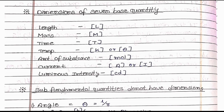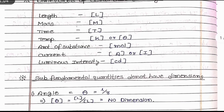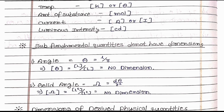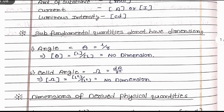Temperature is denoted by [K] or [θ] under the square bracket. Amount of substance is denoted by [mol] under the square bracket. Current is denoted by [A] or [I], and luminous intensity is denoted by [cd] under the square bracket. Sub-fundamental quantities do not have their dimension.